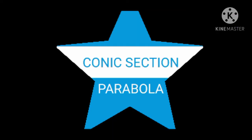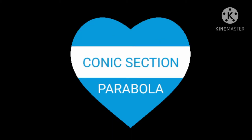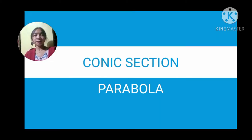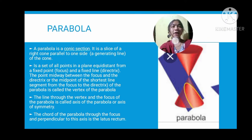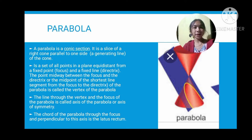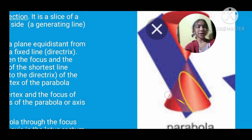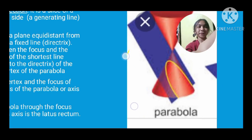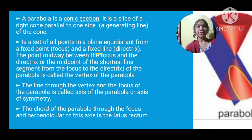We are now on another topic entitled the conic section parabola. I'm going to discuss the conic section parabola and the types of conic sections. Parabola is a conic section — it is a slice of a right cone parallel to one side or a generating line of the cone. This is what a parabola looks like.